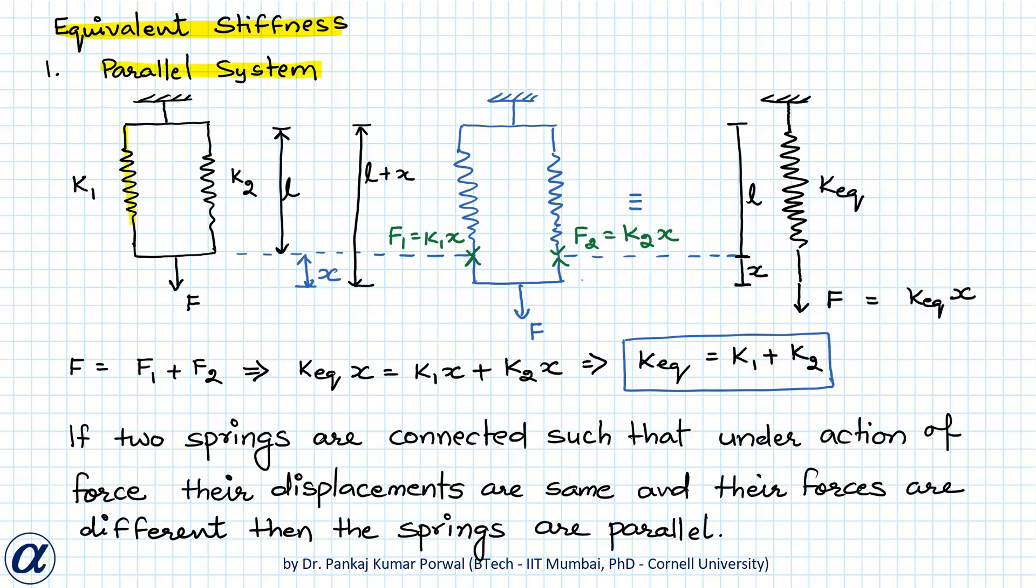So here we have two springs with stiffnesses k1 and k2 connected in this way and a force F is acting in downward direction. The initial length of the springs is L and because of this force F the final length of the springs becomes L plus X.